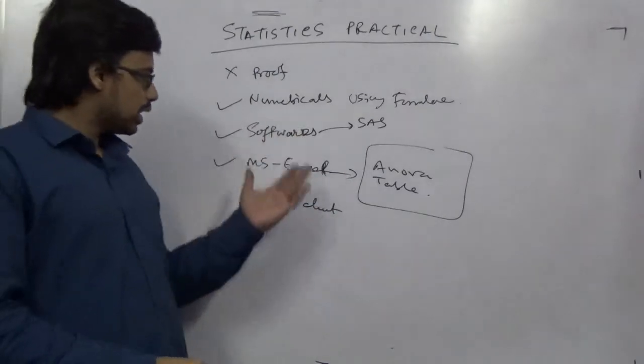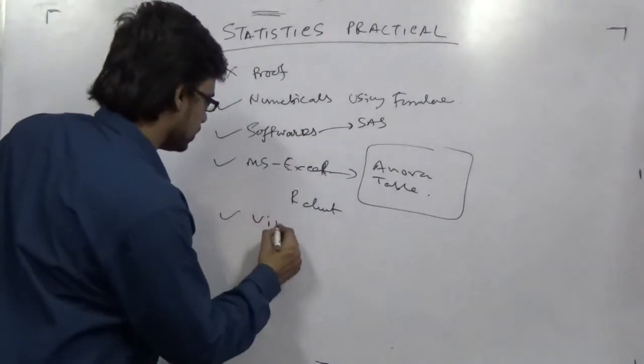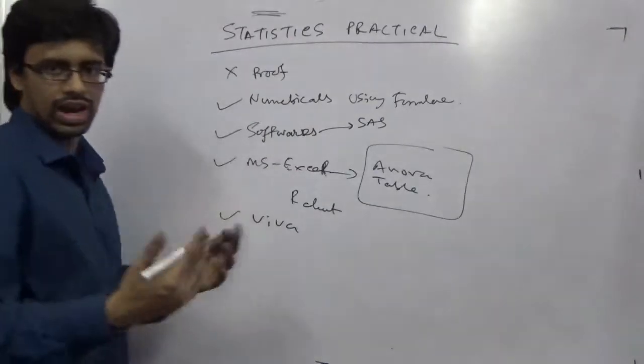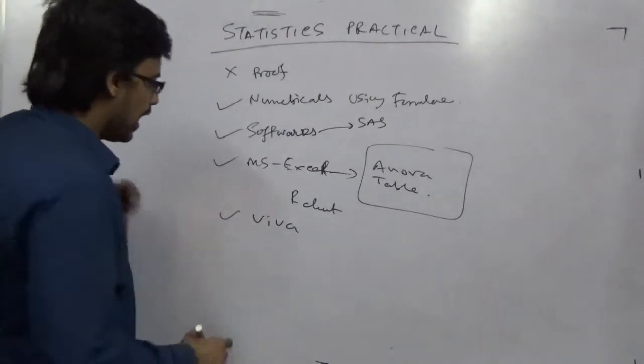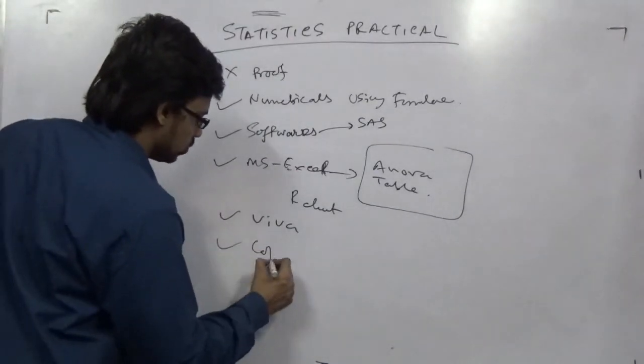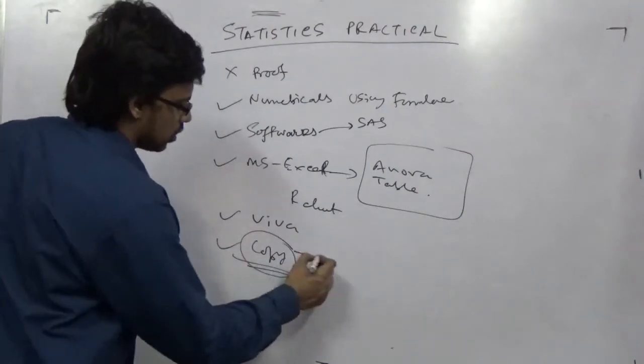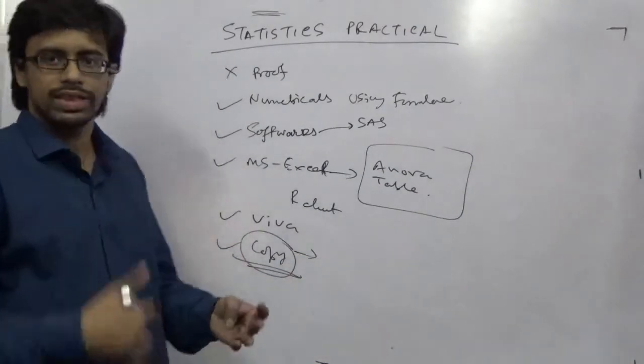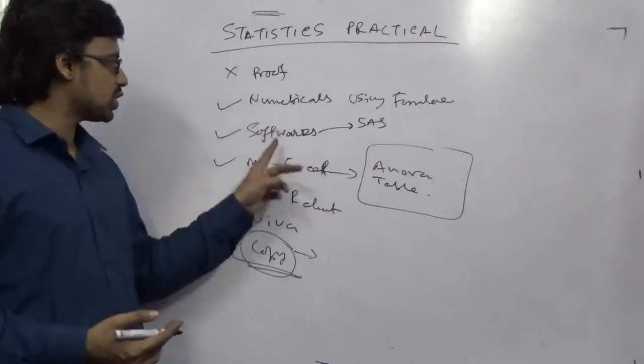And at the end there will be a viva mainly based on these questions, and they will ask you some statistical portions. And there will be a copy you have to make. That is called the practical book. So even that also has an implication of this numerical.